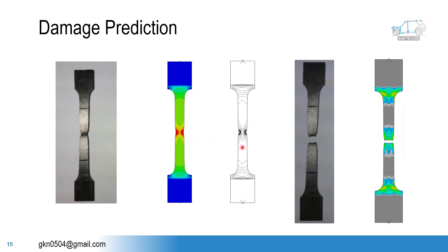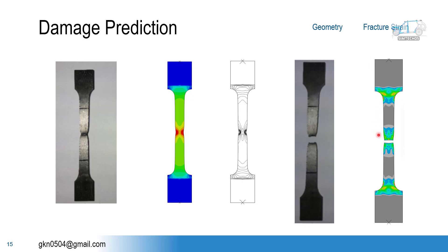Here we can see the stress pattern generated within the component during the tension test. After the damage, the necking occurs, and very similar behavior is predicted by the software. Of course, there is some difference because this component is actually a plate-type component and we consider here a plane stress component. So if you go with the 3D model, you will get better accuracy. If you want to predict the necking effect properly, instead of a 2D plane stress model, if you go for the 3D model with the appropriate thickness, that will give better accuracy, especially for the necking effect.